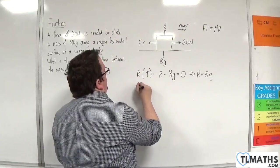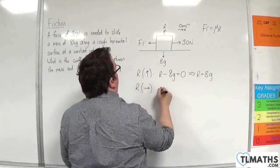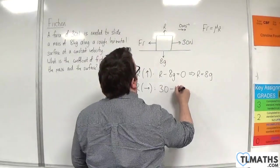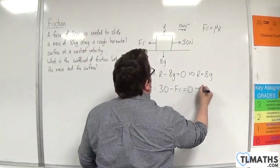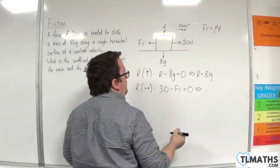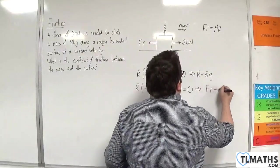And if I resolve horizontally, taking to the right as positive, we'll have 30 take away the friction is equal to 0, because the acceleration is 0. So the friction is equal to 30.